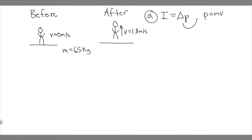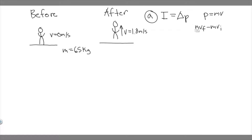If we're finding the change in momentum, because that's what the impulse is, the change in momentum is just going to be M times V-final minus M times V-initial. That's the final momentum minus the initial momentum. Keep in mind M is the same because the mass stays constant throughout the interval. So if we factor out an M, it's just going to be M times (V-final minus V-initial). So this is the change in momentum, which is equal to the impulse.